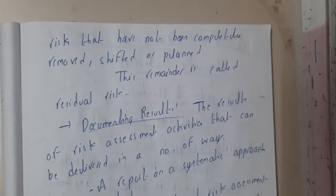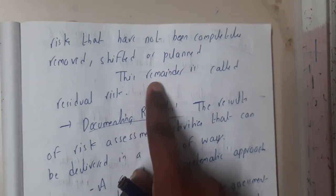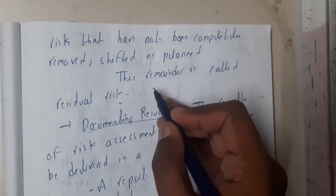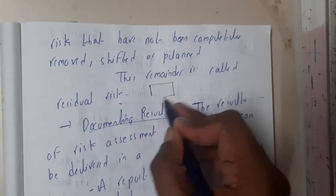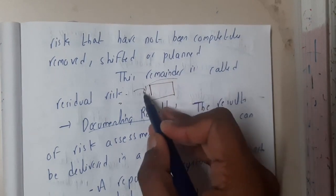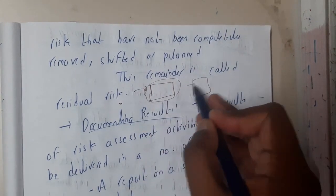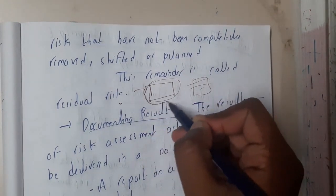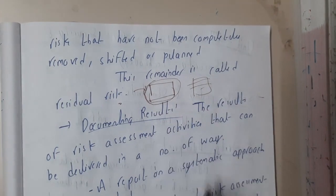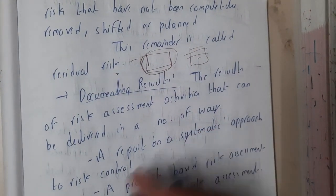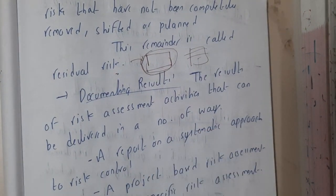Even after a risk has not been completely removed, shifted, or planned away, this remainder is called residual risk. Assume you are resolving a risk — you cannot say that once you remove the risk there is no further occurrence, because there could be some other risk hidden behind it. Those remaining risks are residual risks.